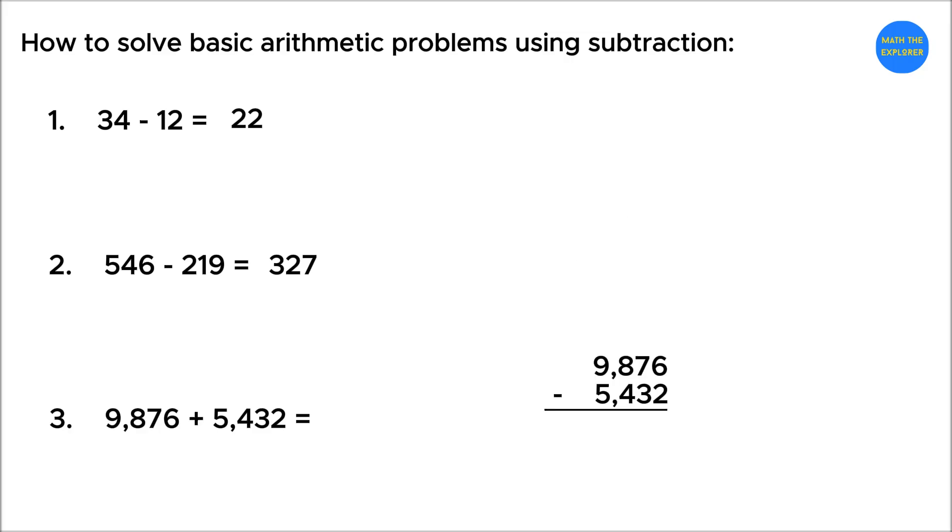To solve 9,876 minus 5,432, line up the numbers by place value, 1000's, 100's, 10's, and 1's.